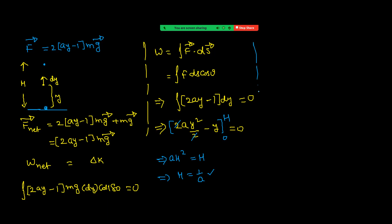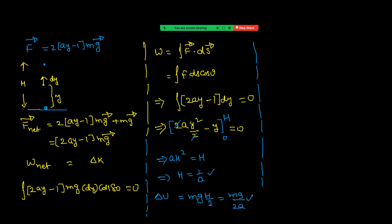Now see the question. He is asking: find the work performed by this force and increment of body's potential energy over the first half of the ascent. The increment in gravitational potential energy can be written directly: delta U = mg·(h/2). The value of h is 1/a, so delta U = mg/(2a). That is the increment of the potential energy.